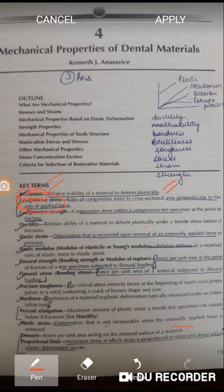These can come as one-liner MCQs or true/false questions, so very important. Compressive stress is basically the ratio of compressive force to cross-sectional area perpendicular to the axis of applied force.